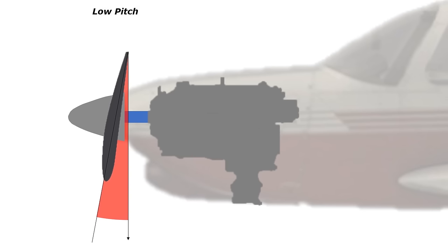But because it's at such a low angle, it can push through the air faster using the same amount of power, thus giving us more revolutions per minute. This is ideal for takeoff and climb when we want as many RPM as we can get.